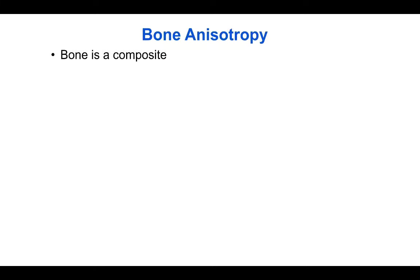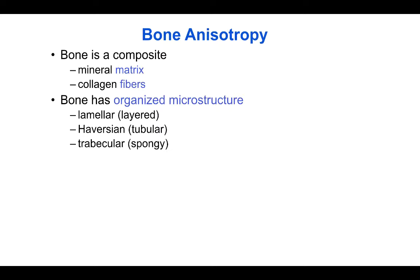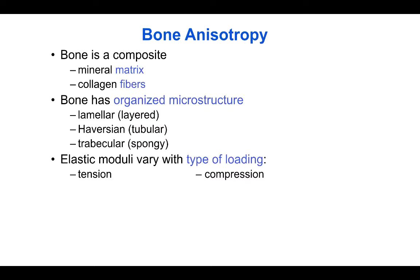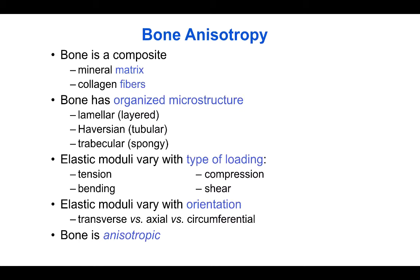Bone is also anisotropic. It's a composite of mineral matrix and collagen fibers, and it has an organized microstructure. In some places it's lamellar or layered. Mostly in long bone it's Haversian or tubular, and at the ends of the bone and on the endosteum it's trabecular or spongy. The elastic moduli of bone vary with the type of loading between tension and compression, bending and shear, and with the orientation of the sample from within the bone. For example, transverse versus axial versus circumferential tensile and compression testing give different elastic moduli — in other words, bone is said to be anisotropic.